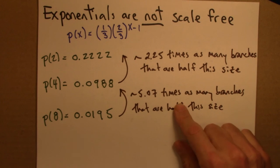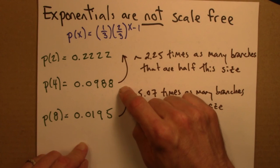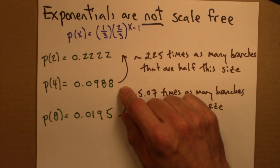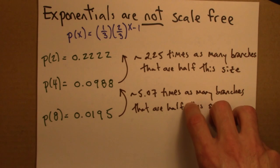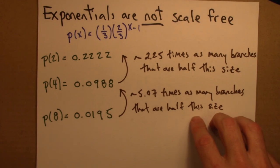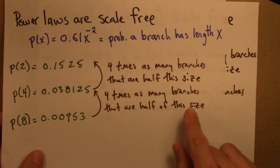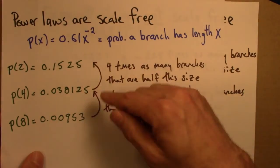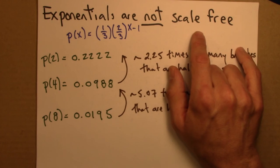So, exponentials are not scale free. You can figure out where you are in an exponential distribution because these ratios change all the time, whereas those ratios don't change if you're in a power law, in a power law distribution. Another way of saying this, power laws exhibit scaling. We see the same feature, in this case 4 times as many branches that are half this size, 4 times as many branches that are half this size. All throughout the entire power law, this is going to be true for any x. Exponentials are not scale free, they don't exhibit scaling, because this relationship is not constant across scales.